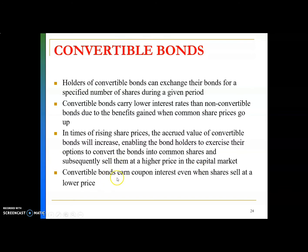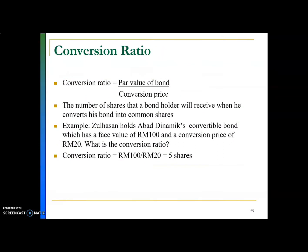Convertible bond earns coupon interest even when shares sell at a lower price. For example, if when you buy the bonds you will get coupon payment. And instead of rising, if the share price of the company goes down, it's not favorable to convert into shares. But if you hold it as a bond, you will still get the coupon. So there is no loss to the bondholder — dia akan untung juga, dia akan dapat return juga. That is the characteristic of convertible bond.